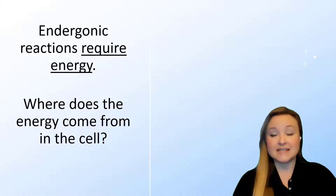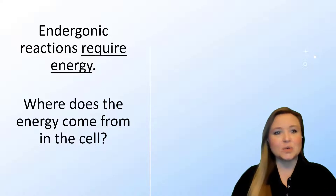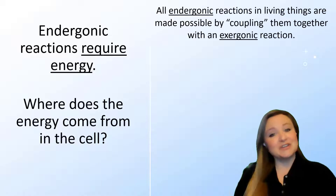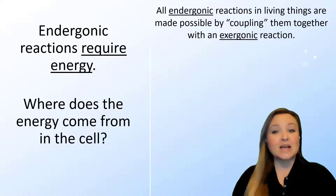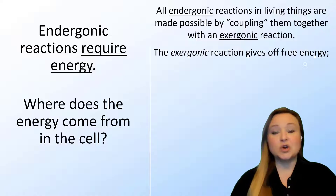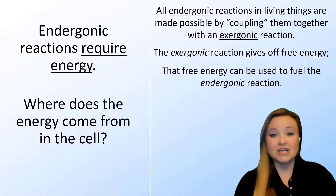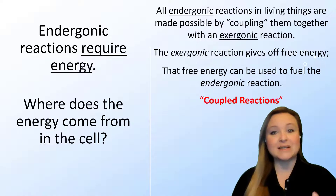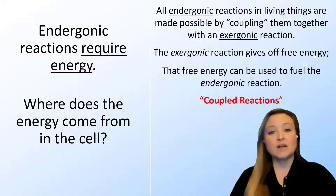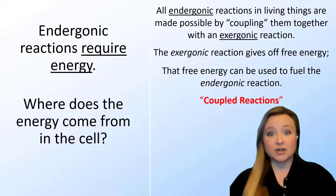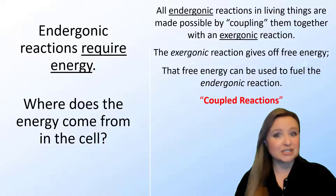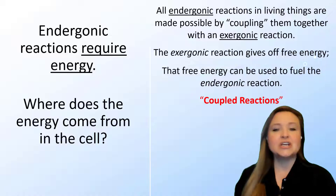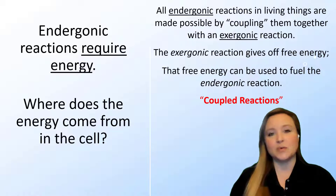So where does the energy come from in the cell? All endergonic reactions in living things are made possible by coupling them together with an exergonic reaction. The exergonic reaction gives off free energy, so that free energy can be used to fuel the endergonic reaction. We call these coupled reactions because an endergonic reaction, in order to happen, occurs at about the same time as an exergonic reaction, and the free energy released gets transferred to the endergonic reaction.